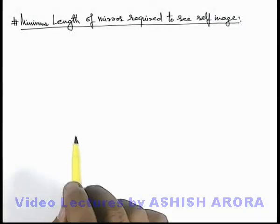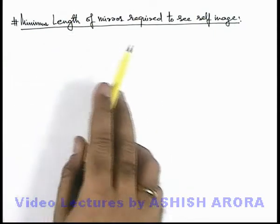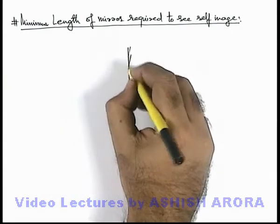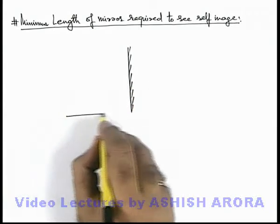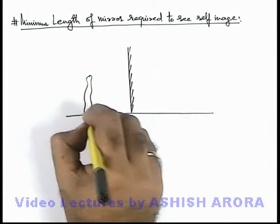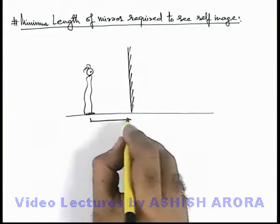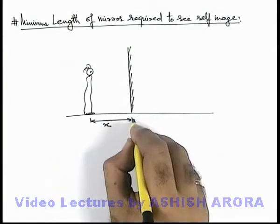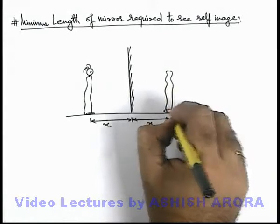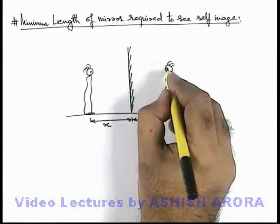A very common illustration useful to understand the field of view is the minimum length of mirror required to see a self-image. Say we are given a large vertical mirror placed on horizontal ground, and in front of the mirror an observer is standing. If the observer is standing at a distance x, then at the same distance x behind the mirror, the image of this observer will be obtained, which is of the same size as the observer because it is a plane mirror.